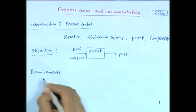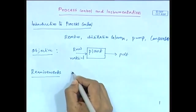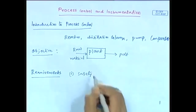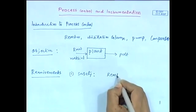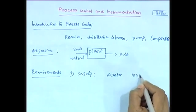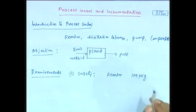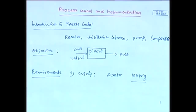To meet these objectives, we need to satisfy some requirements. The primary requirement is safety. For example, a reactor which is designed to operate within 100 PSIG pressure — to maintain this pressure, we need some external intervention so that the reactor operates below this limit. This is the first requirement: safety.